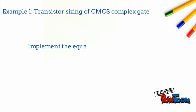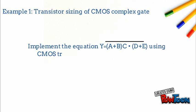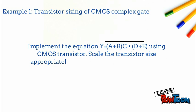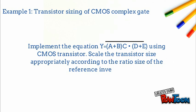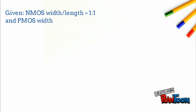Transistor sizing of a CMOS complex gate: implement the equation Y = (A + B) · (C · (D + E))̄ using CMOS transistors. Scale the transistor size appropriately according to the ratio size of the reference inverter. Given: NMOS width-to-length equals 1-to-1, and PMOS width-to-length equals 2-to-1.